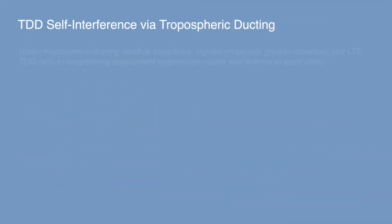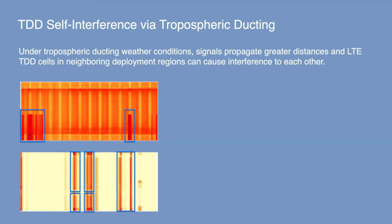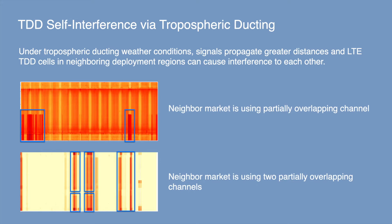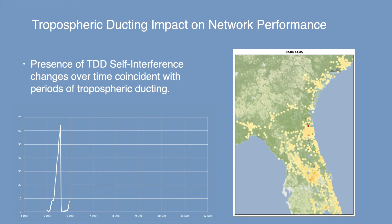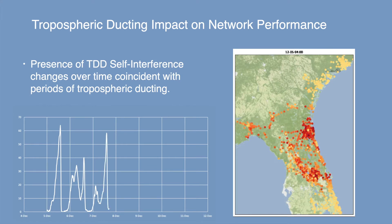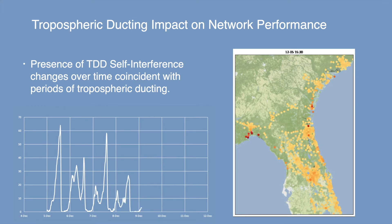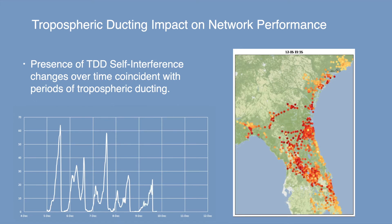With PRB charts, we can visualize the impact of TDD self-interference during periods of tropospheric ducting. The charts show the frequency of an LTE TDD channel on the y-axis and several days of time on the x-axis. The signature within these PRB charts reveals the channelization of the aggressor cells. Network performance is favorable when ducting is not active — the proverbial calm before the storm — but when ducting becomes active, interference arrives and network performance severely degrades. The map on the right shows a time-lapsed video of how TDD self-interference impacts cells across a large region, while the chart on the left shows the number of cells impacted over a 5-day period.